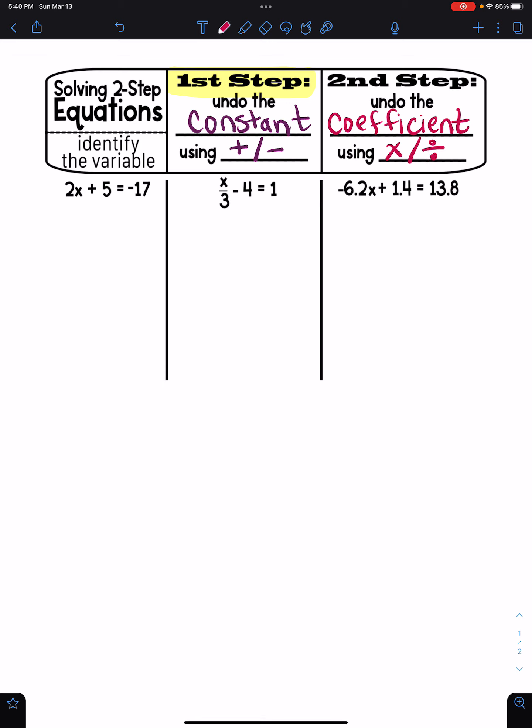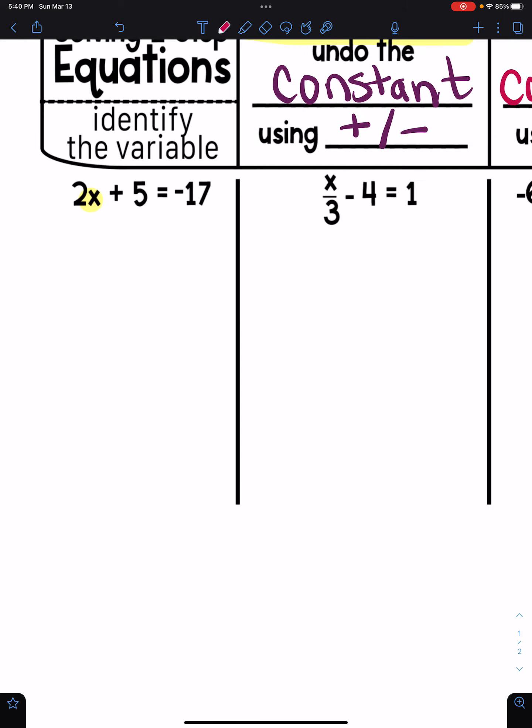So let's jump right in. We know our first step is always to find that variable and ask ourselves what's happening to it. In this case, x is being multiplied by two and added to five. So I need to get rid of the two and the five. And I'm going to do that by doing the opposite operation. So I'm going to be subtracting five and dividing by two.